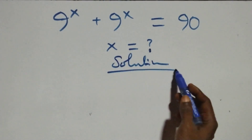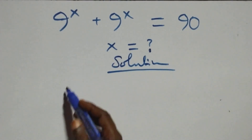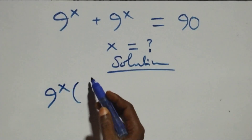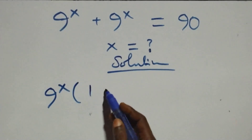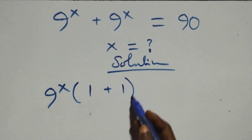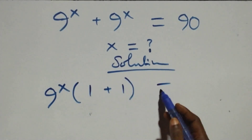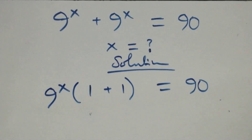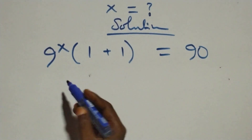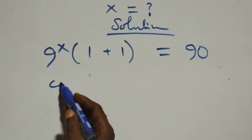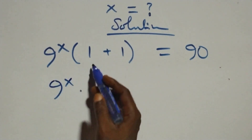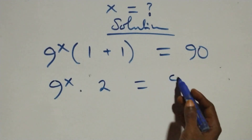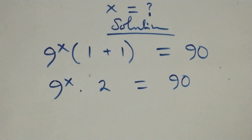From what we have here, we can factor 9 raised to power x, and we have 9 raised to power x into brackets. Here we have 1 plus 1, then equals to 90. This is the same thing as 9 raised to power x times 1 plus 1, that's 2, then equals to 90 on this side.